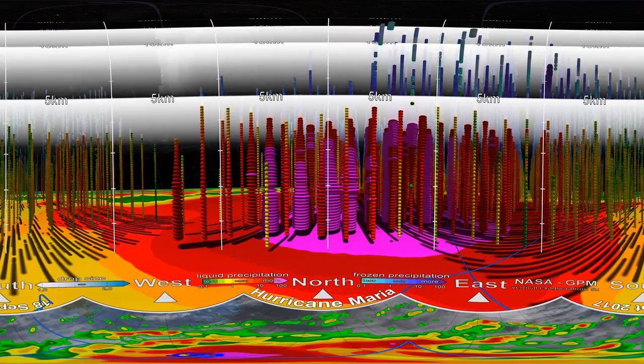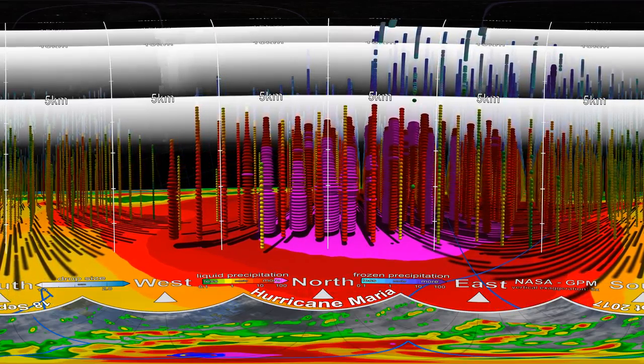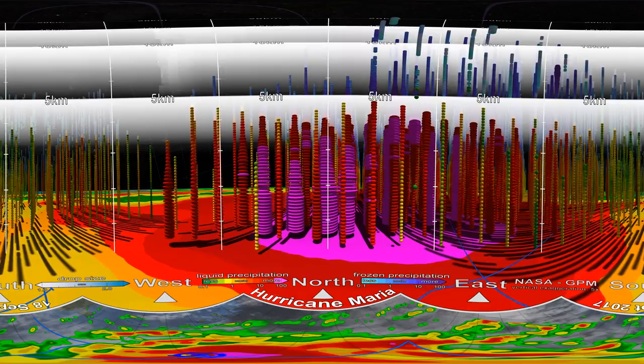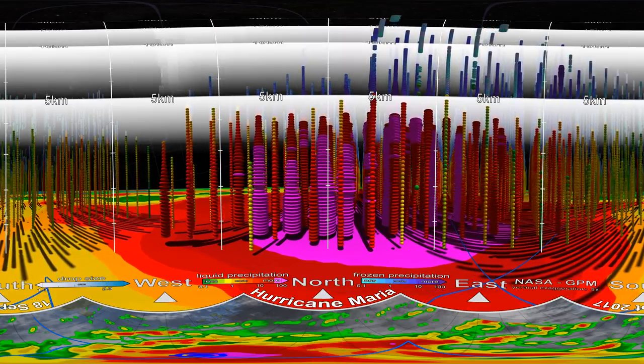While NASA's GPM satellite can detect big features like the shape of the eye wall, it can also measure tiny precipitation particles.